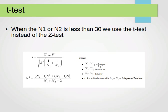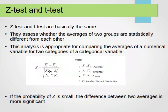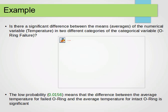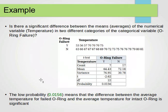Remember: x̄₁ and x̄₂ are the averages, n₁ and n₂ are the counts or number of values, and s₁² and s₂² are the variances. We use the t-test when the number of points is less than 30 — that's just how it is typically done. Now let's take an example.